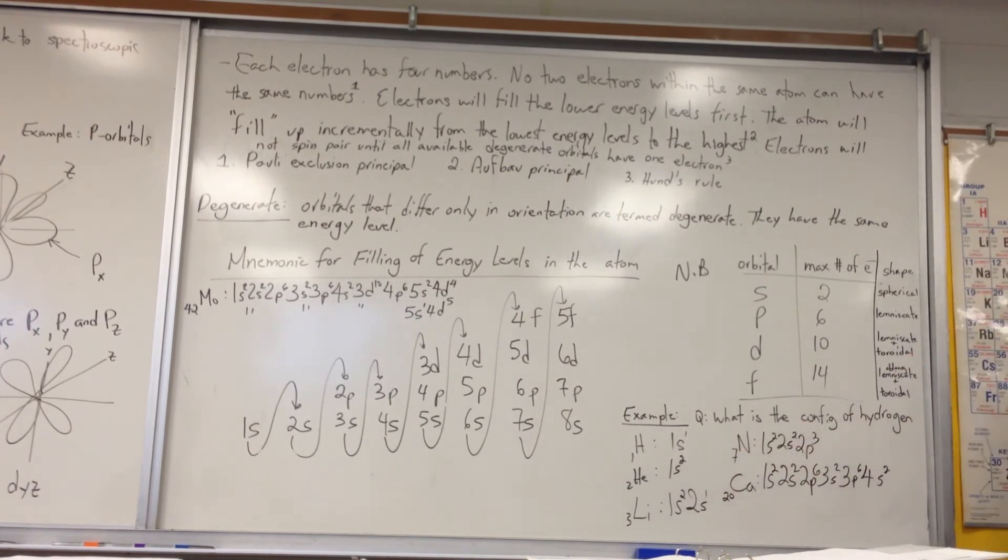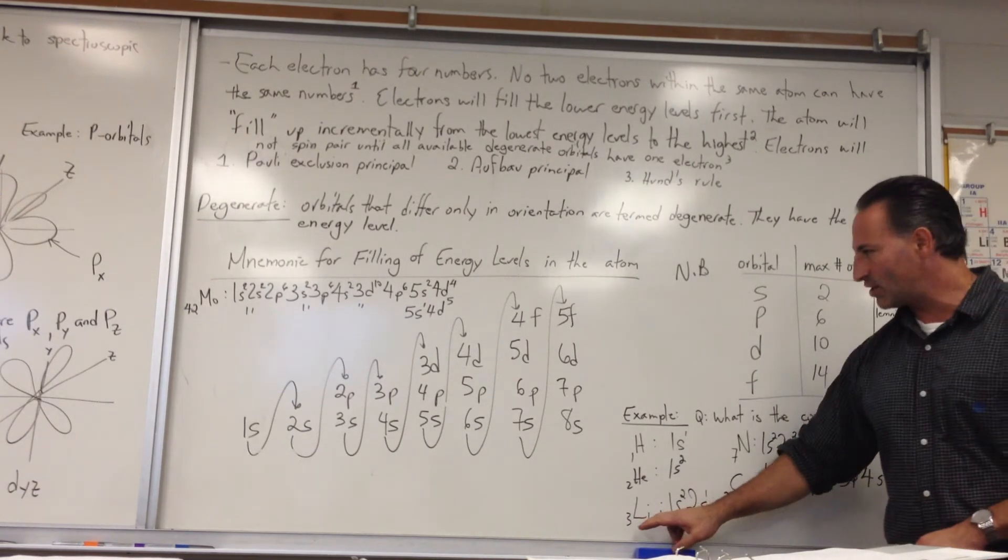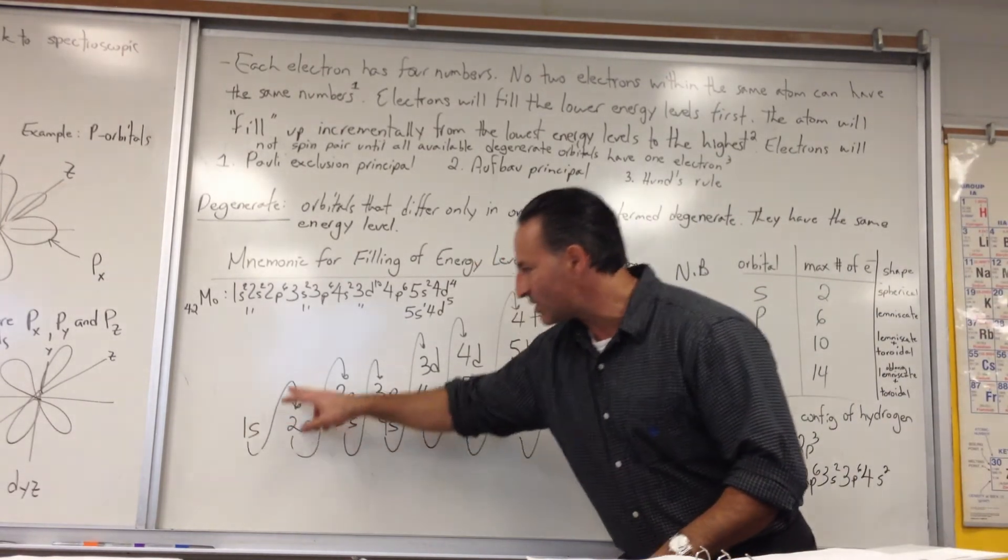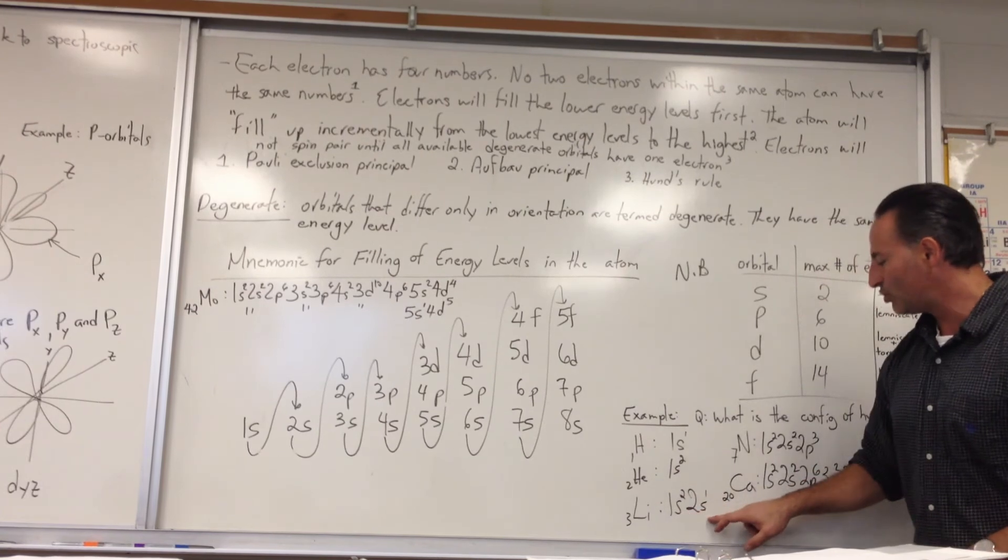With lithium, there are three protons, and a neutral lithium atom will therefore have three electrons. So the configuration, we follow the pattern, we fill the 1S level, and we're going to start the 2S level, so we get 1S2, 2S1.